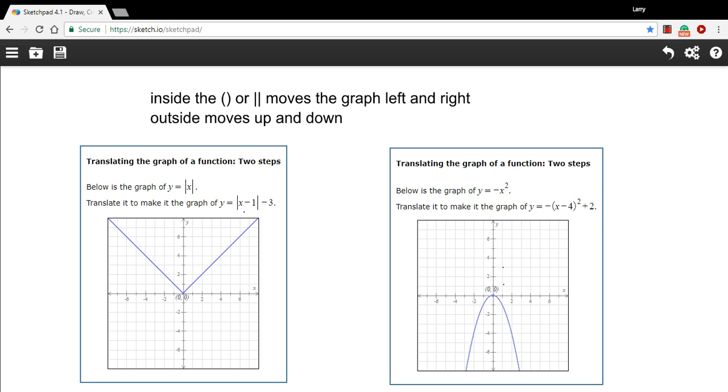The thing to remember is that the changes inside the parentheses or the absolute value symbols are going to move the graph left and right. If it's a negative value it's going to move it to the right, if it's a positive value it's going to move it to the left.